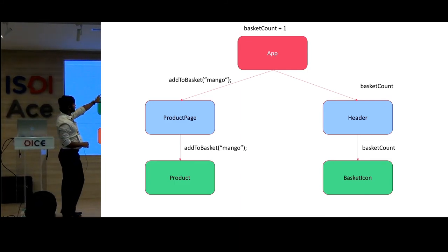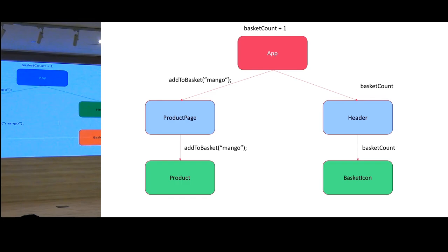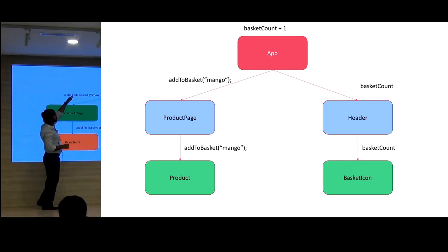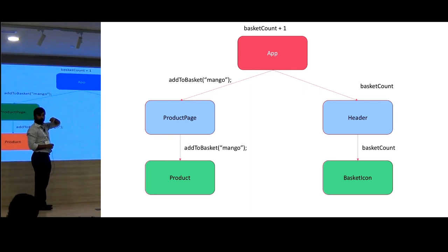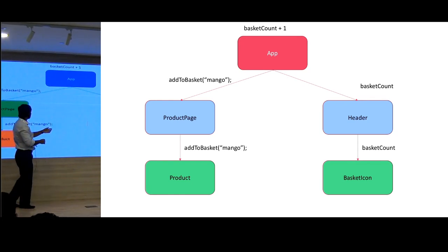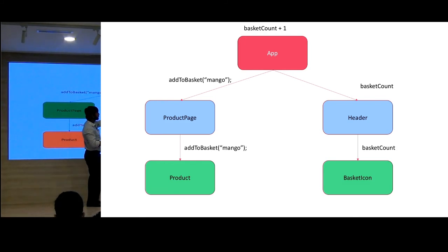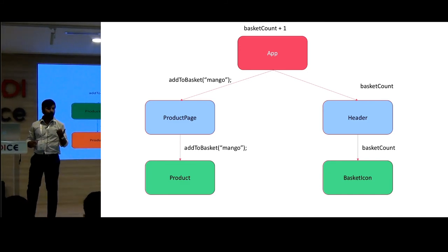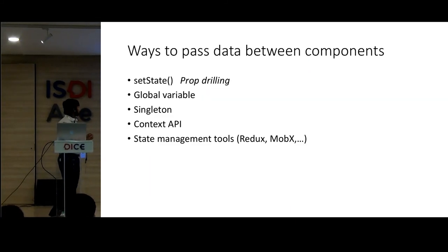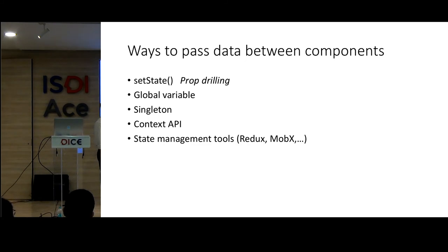So now the application has a header with basket icon, and a new product page showing the list of products with an Add button. When Add is clicked, the application needs to update the basket icon because the user has added an item. There are lots of components in between that don't really care about the basket icon count, but we have to thread data through all of them to connect the components properly.